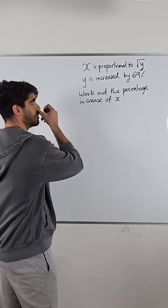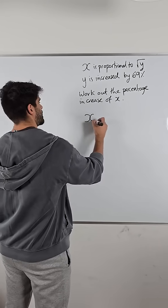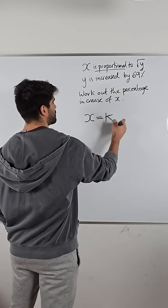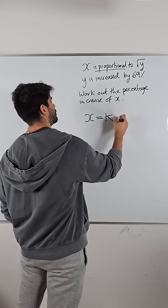So x is proportional to root y. Proportional means some multiple of root y.